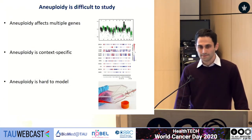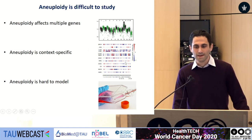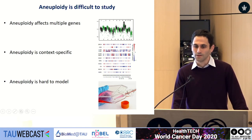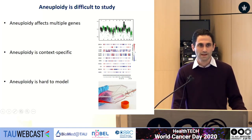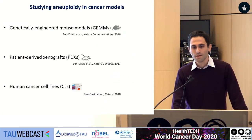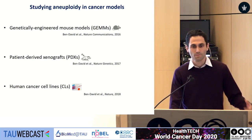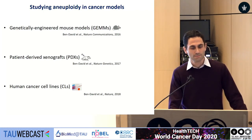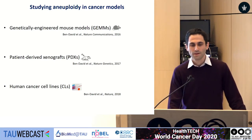A major reason for that is that aneuploidy is really challenging to study. It affects multiple genes by definition. It is context-specific, and it is hard to model. Even today, in the CRISPR era, it is very challenging to introduce or remove chromosomes from cells. If we want to study the effect of aneuploidy in cancer functionally, we need to rely on available cancer models and understand how accurately these models capture the aneuploidy patterns seen in the tumors from which they were derived, and how heterogeneous and stable our models are with regard to aneuploidy.